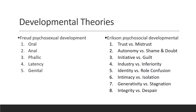Industry versus inferiority is during childhood. These individuals become more aware of themselves and start to learn complex skills like reading, writing, arithmetic, and telling time. The fifth is identity versus role confusion, during adolescence. This is seen as a transitional stage characterized by rapid and dramatic physiological, emotional, and social changes.